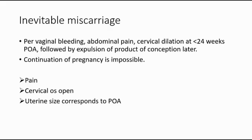Moving on to inevitable miscarriage. There is per-vaginal bleeding, abdominal pain, and cervical dilatation at less than 24 weeks of gestation, followed by expulsion of product of conception. This type of miscarriage makes it impossible to continue the pregnancy. The characteristics are pain, cervical os is open, and the uterine size also corresponds to the period of amenorrhea.